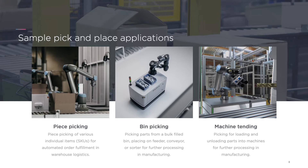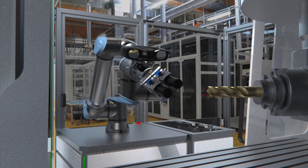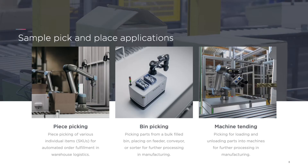Very closely related to bin picking is machine tending, which is the same kind of picking operation, but you pick to load or unload machines — for instance, a CNC machine where you place the object inside for processing. In that case, you need more accuracy in the placing operation.